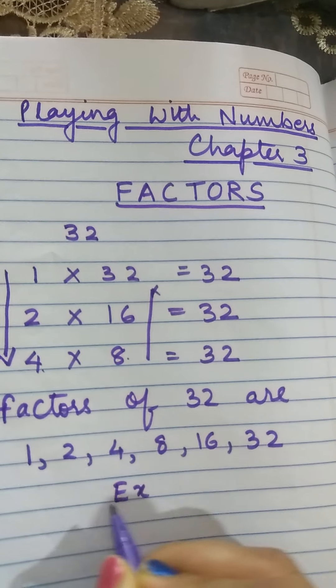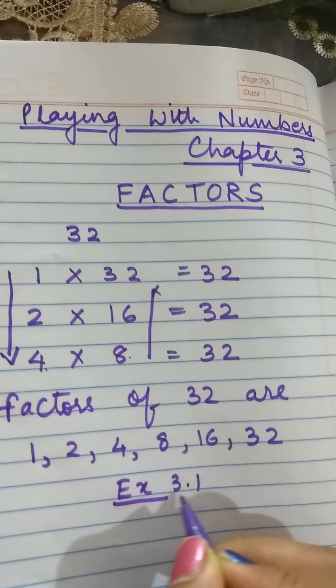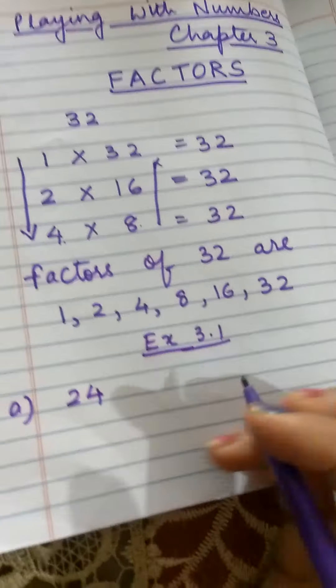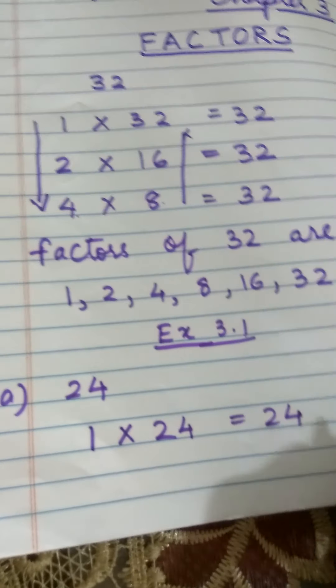Now I am taking up the exercise 3.1 question 1. Part A is to find the factors of 24. So let's start the process. 1 is always a factor of all the numbers. So 1 into that number itself always gives us first 2 factors.